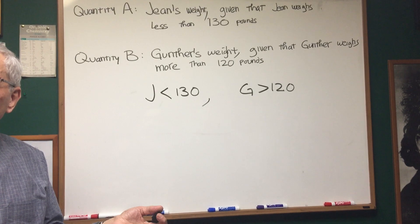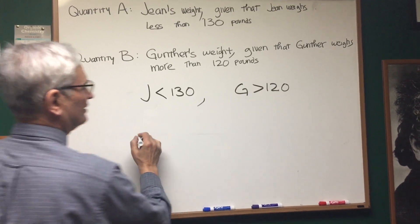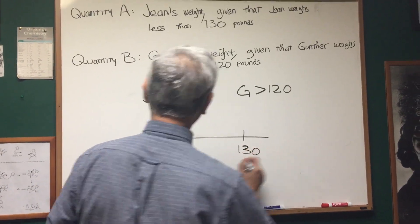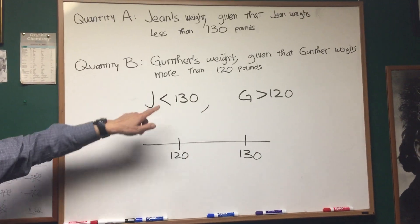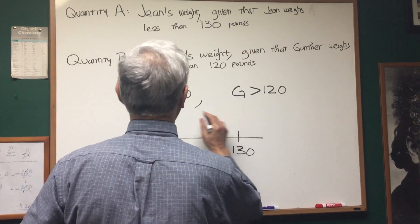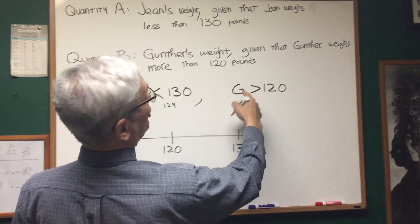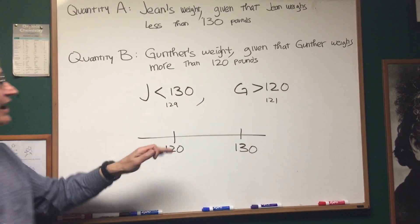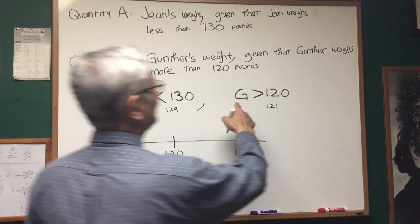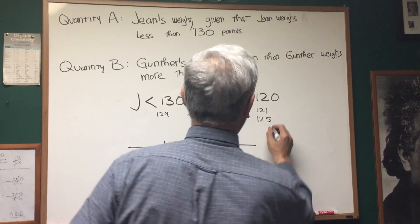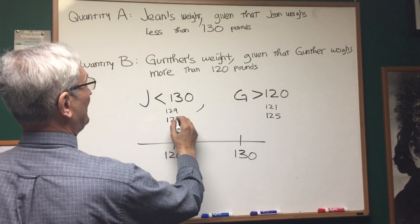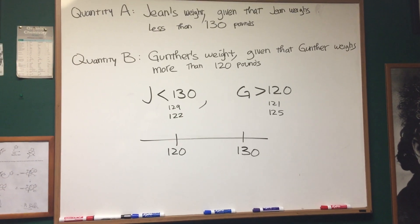Is there enough information here to determine which is greater? If we make a little number line — here's 120, here's 130 — Gene's weight is less than 130, so she could weigh 129 pounds, and Gunther could weigh 121 pounds. In that case, Gene's weight would be greater. However, you can think of another instance where Gunther's weight is 125 and Gene's weight is 122. In that case, Gunther's weight would be greater.